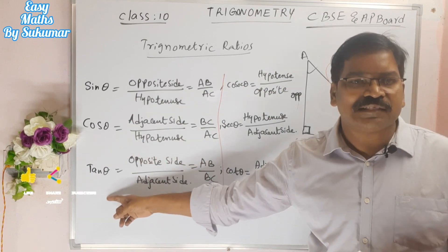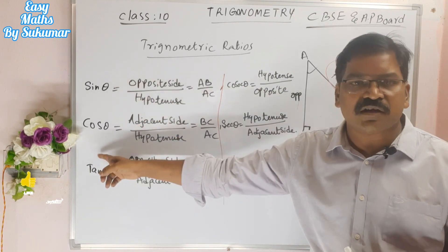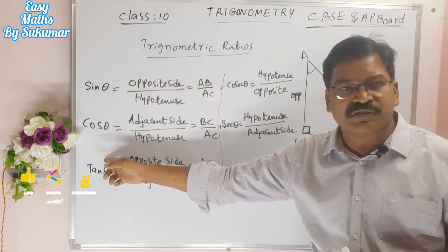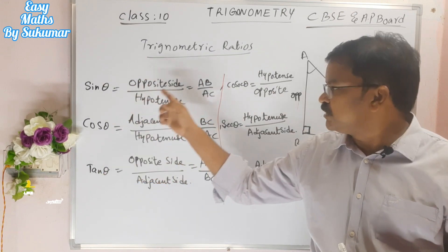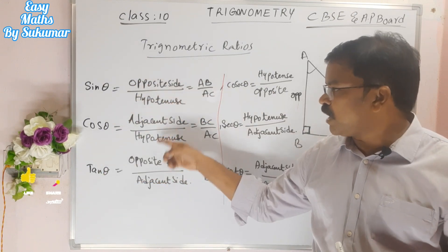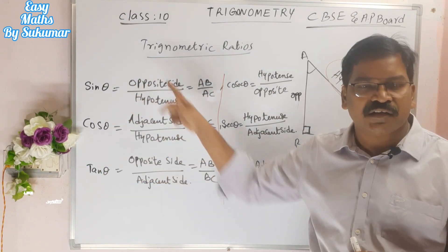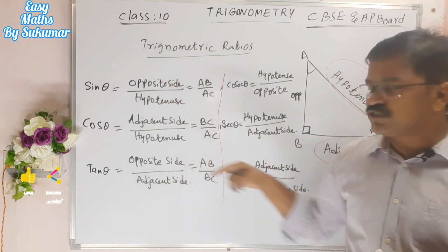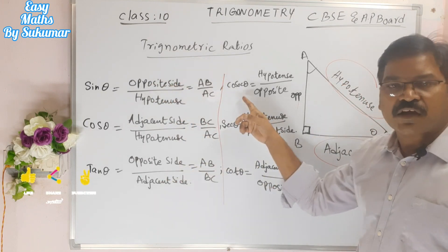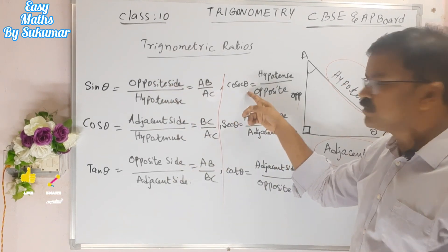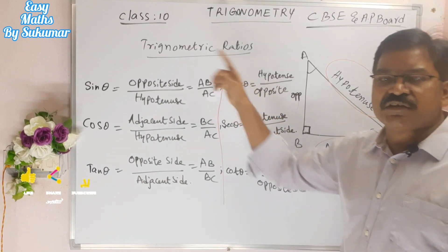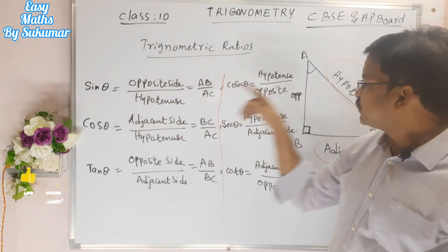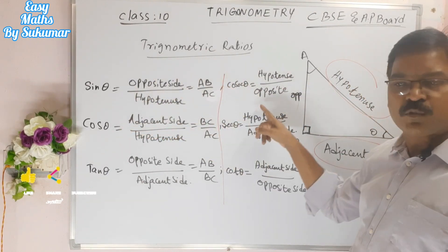Tan theta also equals sin theta divided by cos theta — the two hypotenuses cancel out, leaving opposite side by adjacent side. Cosecant theta is the reciprocal of sin theta, that is hypotenuse by opposite side.